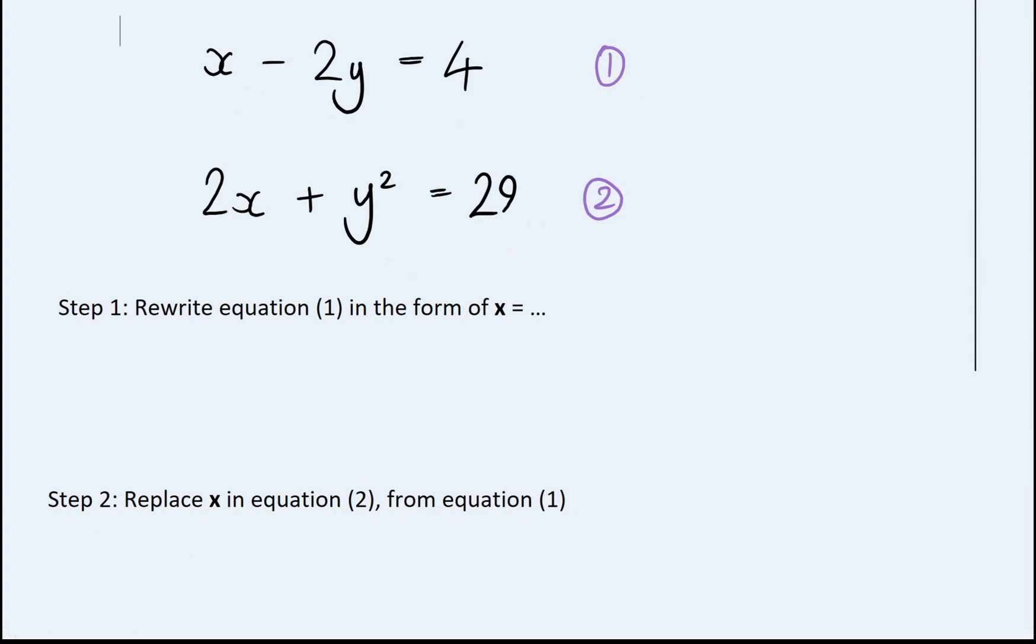First step, I need to rewrite the form of x equals. Again, we picked x because there's only one of them. If this was 2x minus y, we would then go for y equals instead. So let's do that.